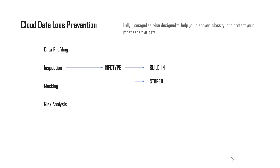In the previous chapters we talked about inspection and masking. In this chapter we'll talk about data profiling. Data profiling is very similar to inspection. The only difference is that the profiling process would be a continuous process and it wouldn't stop once you finished your job trigger. Another important thing is that data profiling currently only works for BigQuery.